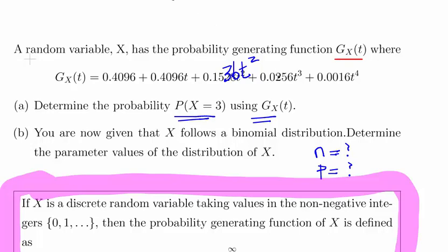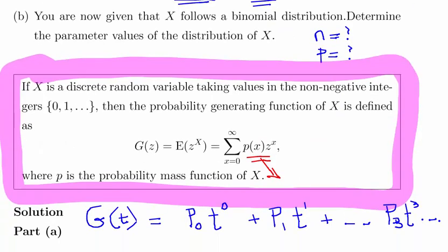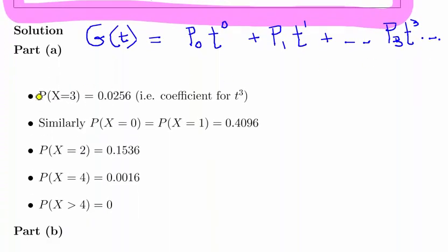So what we have to do here is look at what term has a power of 3 there and look at the coefficient associated with it. So it's 0.0256. So that's actually the answer.